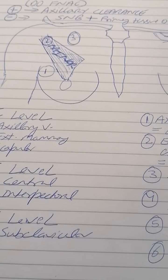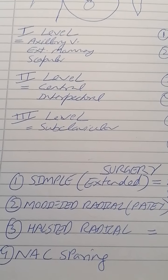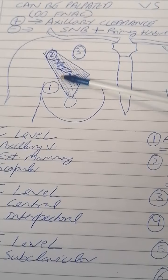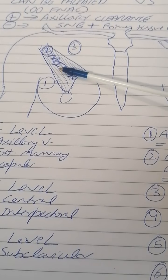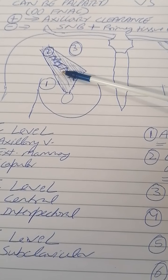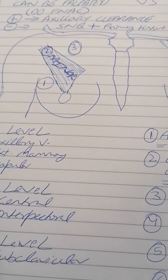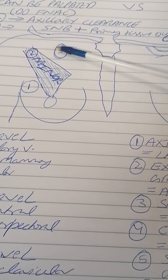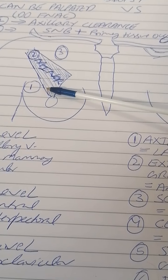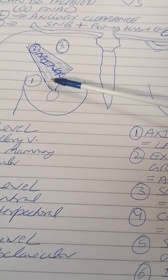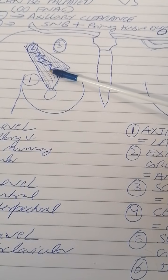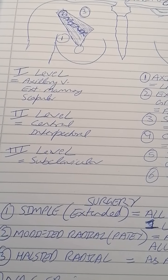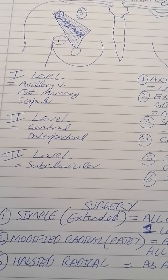The third procedure is the Halstead mastectomy, also called radical mastectomy. It is similar to Patey mastectomy but goes further: not only is the pectoralis minor removed, but the pectoralis major is removed as well. All three levels of axillary lymph nodes are cleared, plus both pectoralis muscles are excised. This is a much more extensive operation and is generally less favored due to the muscle removal.